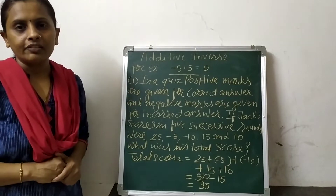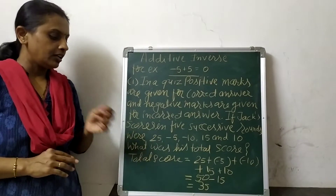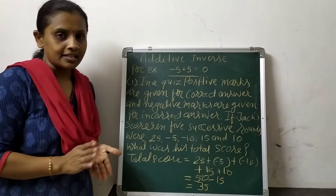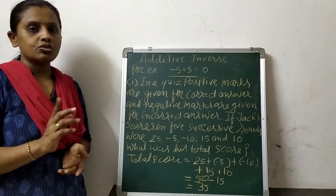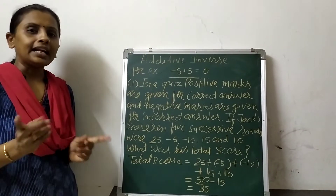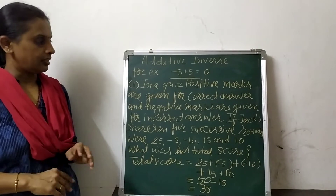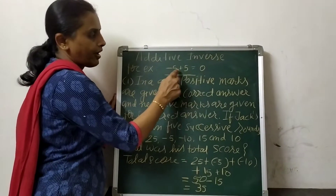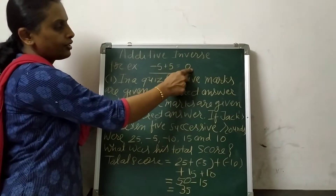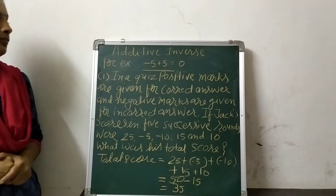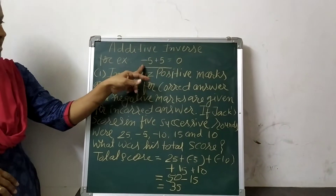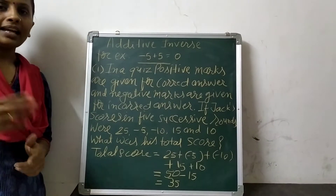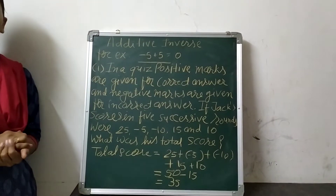What is additive inverse? When we add two numbers and the answer of that addition is 0, then those two numbers are called additive inverse of each other. For example, minus 5 plus 5 is equal to 0. So minus 5 and 5 are the additive inverse of each other.